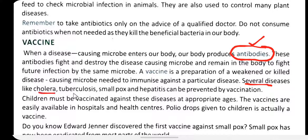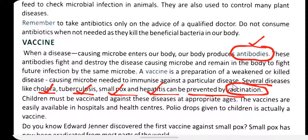Several diseases like cholera, tuberculosis, smallpox, and hepatitis can be prevented by vaccination. If we get vaccinated before the disease occurs, we will not get cholera, TB, or smallpox. Children must be vaccinated against these diseases at appropriate ages.